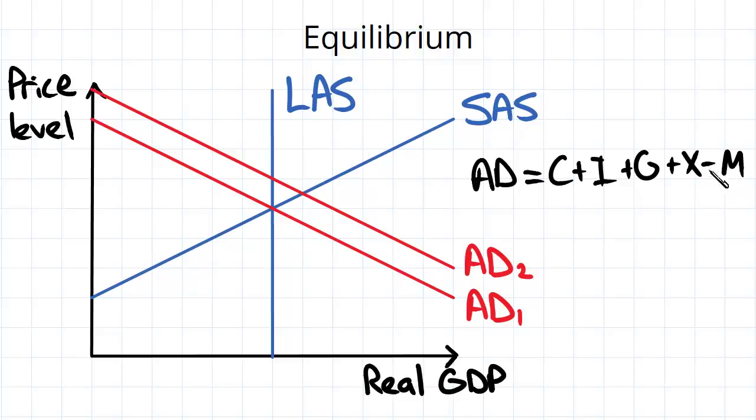For example, with net exports, if some foreign economy has had its price level rising, then the households in that economy might seek imports such as from this economy, so you get an increase in net exports, meaning an increase in aggregate demand.